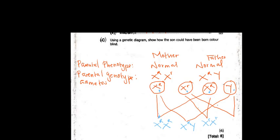It's advisable to start with the capital letters, so write X capital R and X small r. If you start with the smaller letter it's okay, but it's just advisable that way. For the last combination it's X small r with Y. We label this section as F1 genotype.